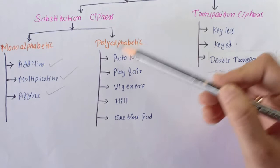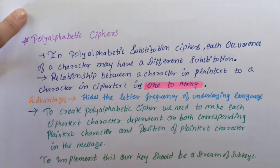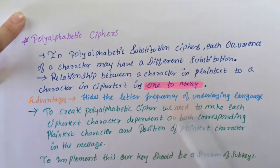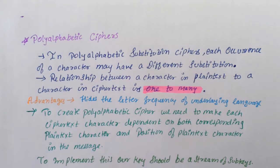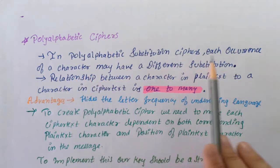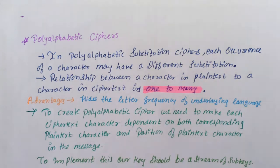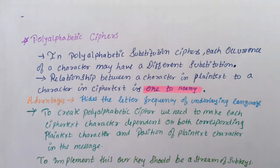Now we will be starting polyalphabetic ciphers. In monoalphabetic ciphers, which we studied in my previous video, we used to replace one character in plain text with one character in cipher text — the relation was one to one. But in polyalphabetic ciphers, each occurrence of a character may have a different substitution in cipher text, so the relationship between a plain text character and a cipher text character is one to many.